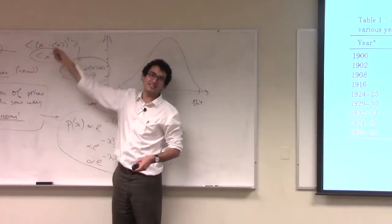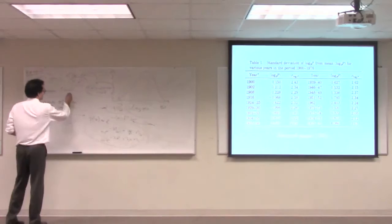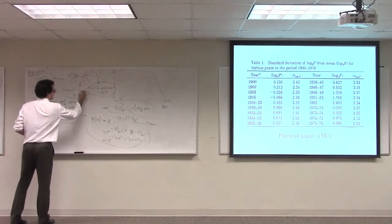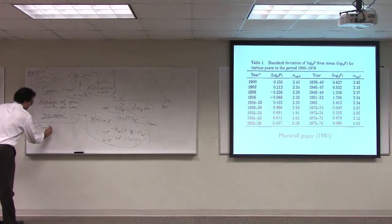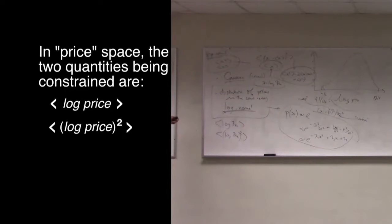So let's look at the average of the log of the price. This is the first thing that's constrained, because remember, it's a Gaussian distribution in x, where x is log p, log of the price, log price. So these are the two quantities that are being fixed if we want to work in price space as opposed to log price space.